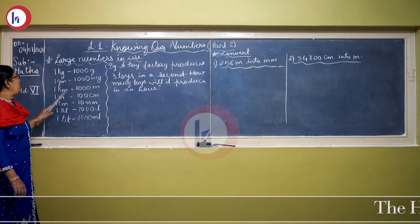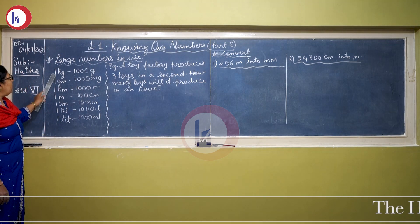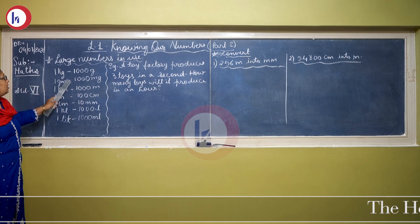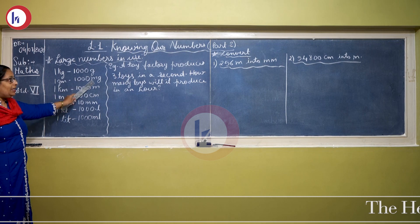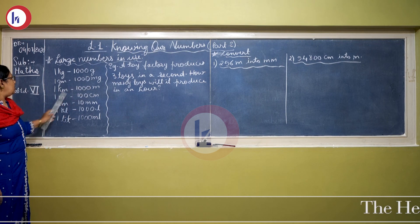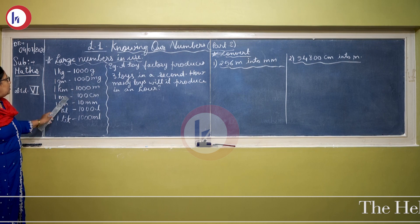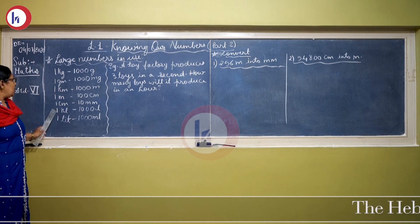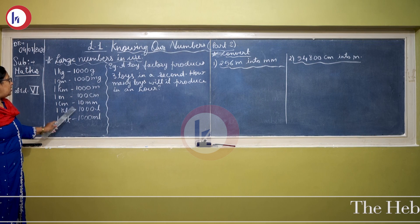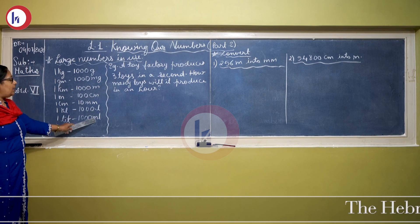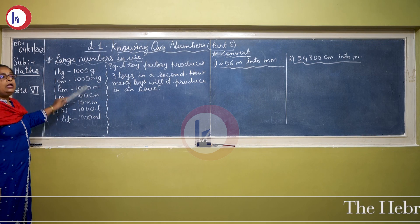Now here I have given the measures — I will just repeat them for you. Your 1 kg is 1000 grams, 1 gram is 1000 milligrams, 1 kilometer is 1000 meters, 1 meter is 100 centimeters, 1 centimeter is 10 millimeters, 1 kiloliter is 1000 liters, and 1 liter is equal to 1000 milliliters.